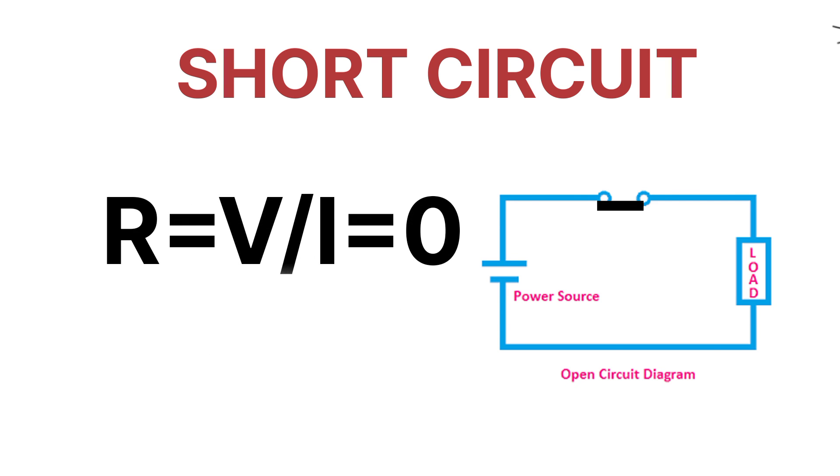In case of short circuit, the resistance value is zero. Why? Because the voltage in this circuit is zero. For that reason, we're calling it a short circuit. So these are the main differences between short circuit and open circuit.